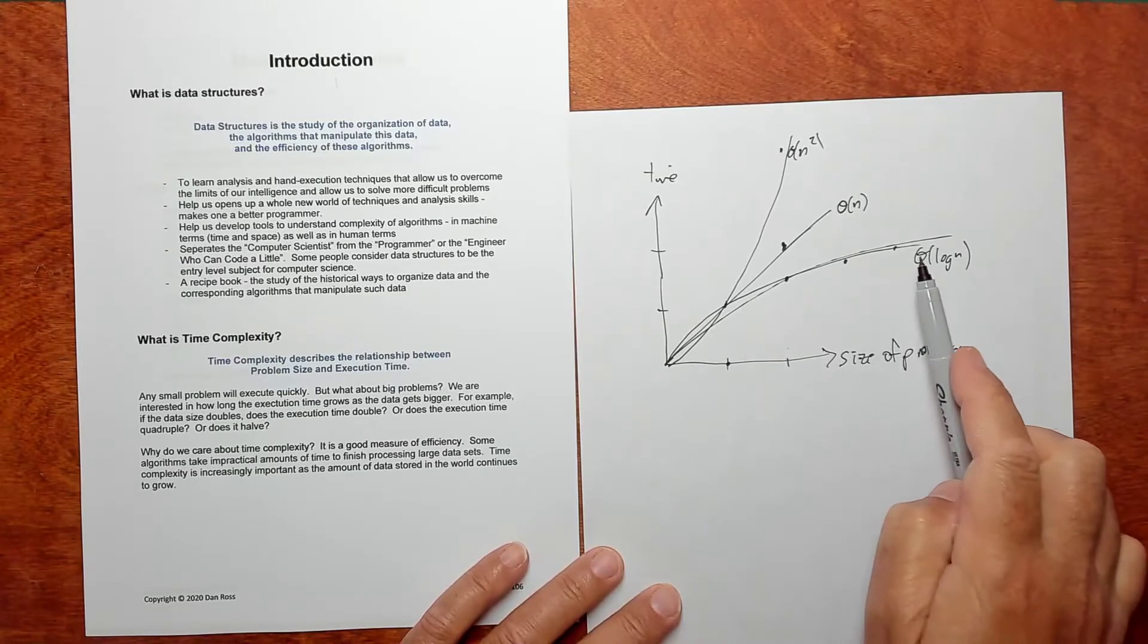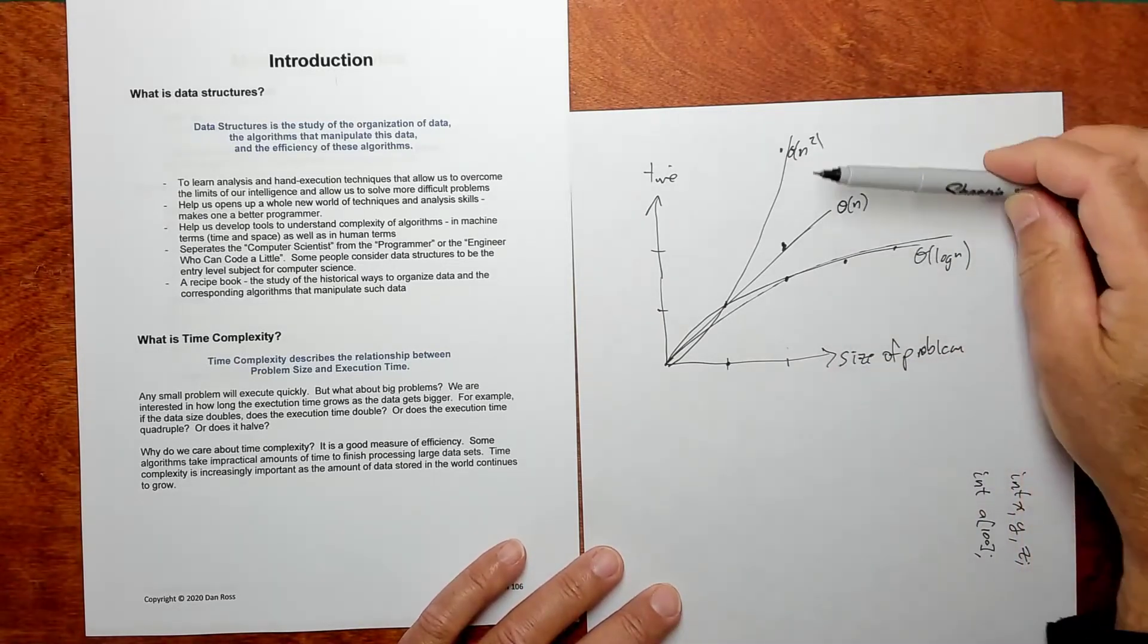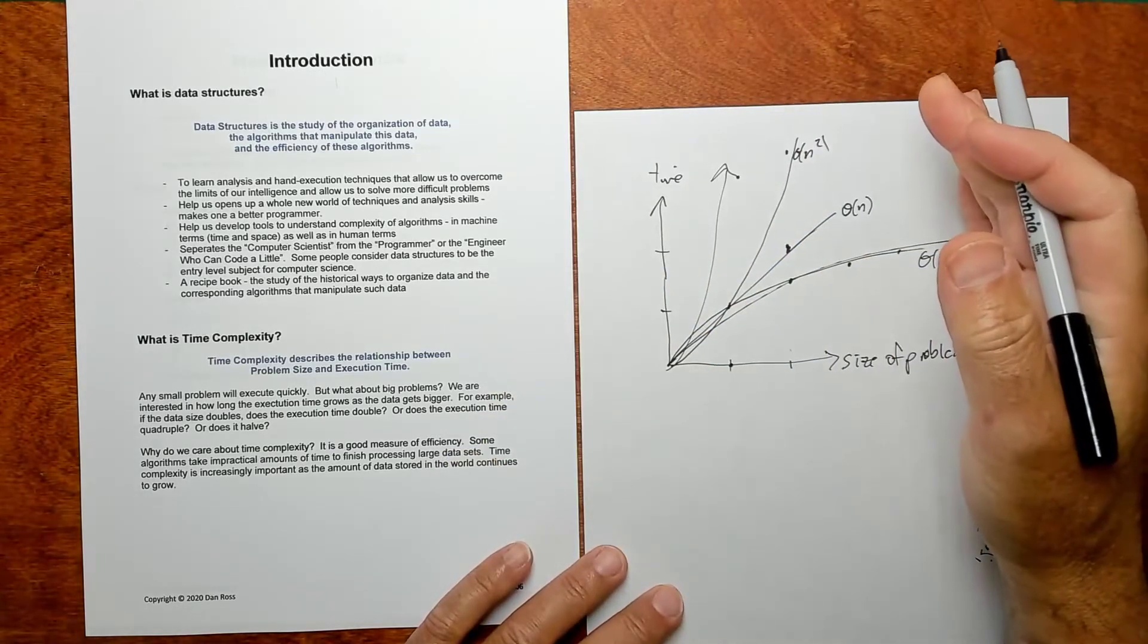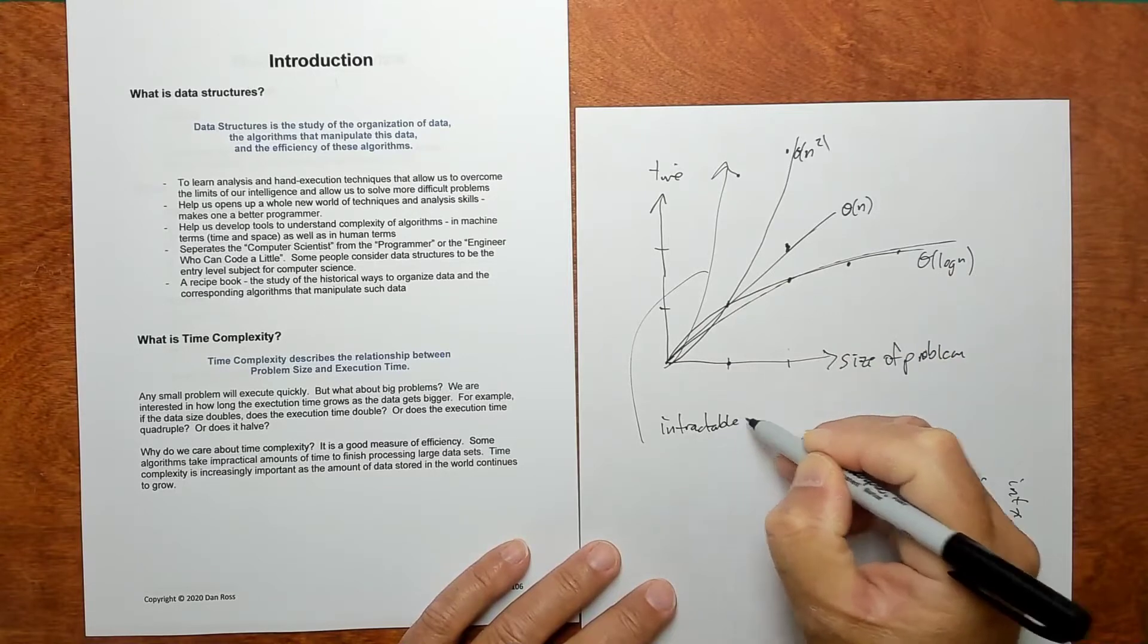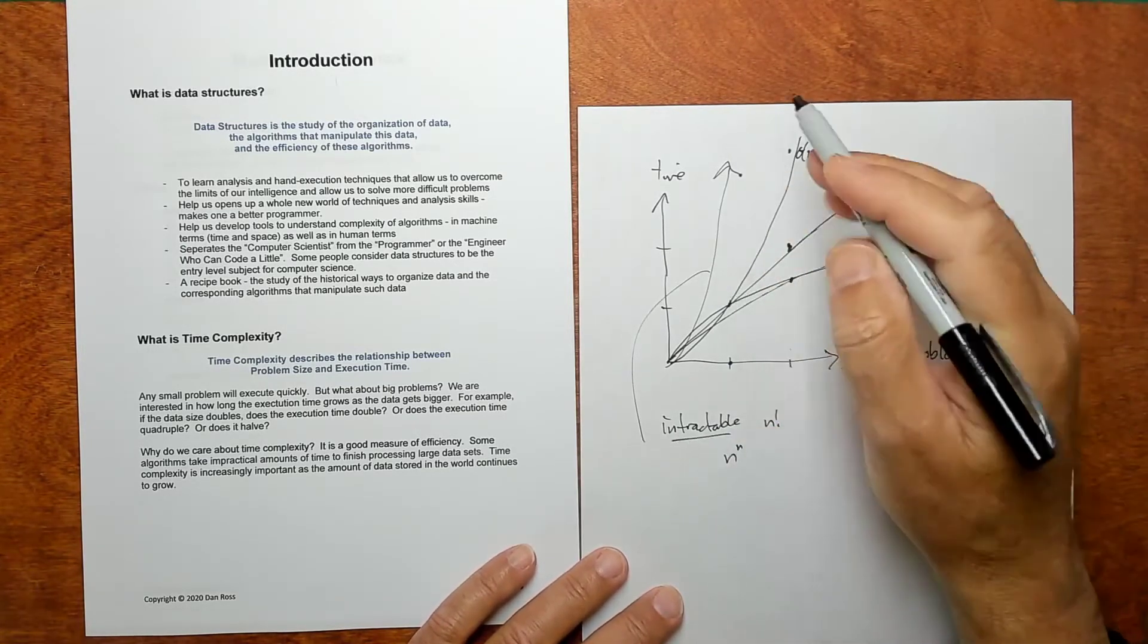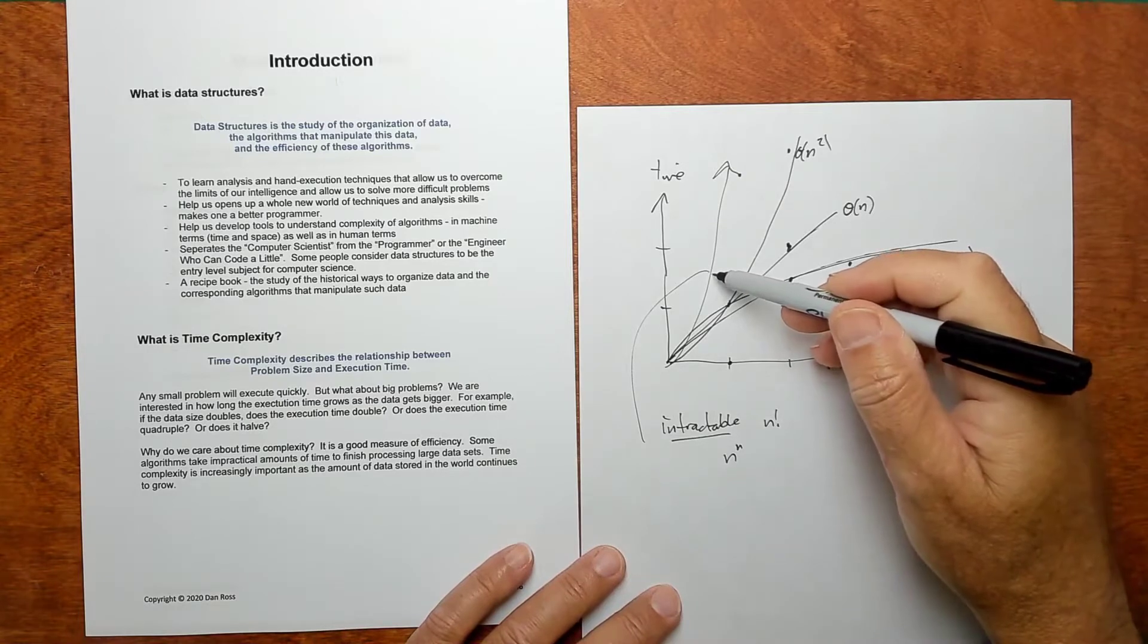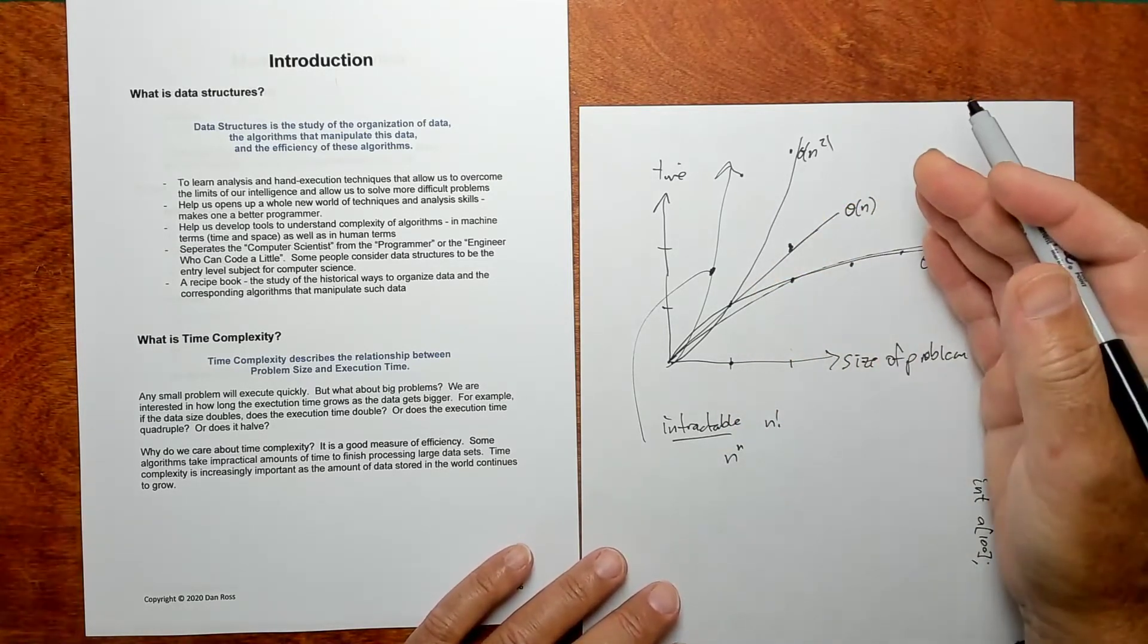So we're interested in how the execution time changes with the size of the problem. As the problem gets bigger, how much longer does it take for the algorithm to execute? And why do we care? Well, some algorithms grow so quickly that you make the problem a little bit bigger, they just take so much more time that maybe, for practical purposes, they'll never finish. We call that intractable. And there's time complexities like n factorial or n to the n. Things like that are basically intractable. That is, they take so long to execute that nobody will be around when this thing executes. It could be thousands of years or something, millions of years for some of them.